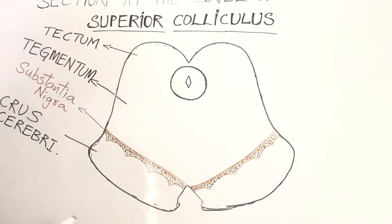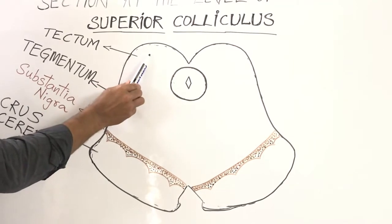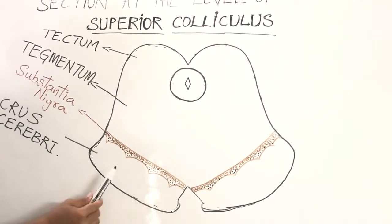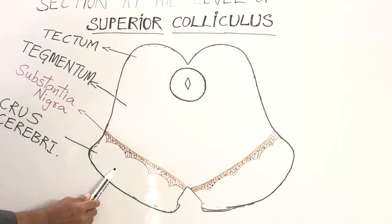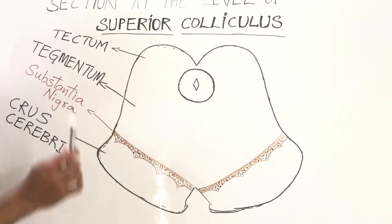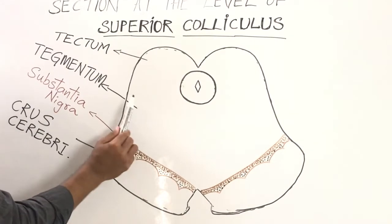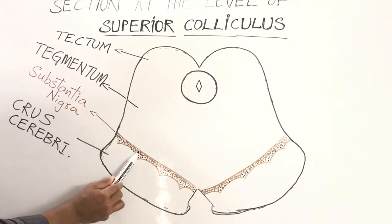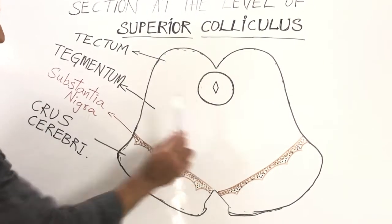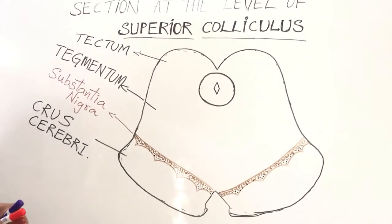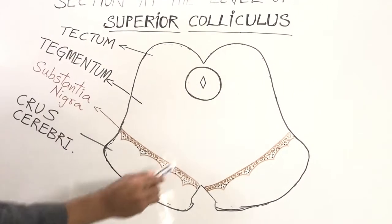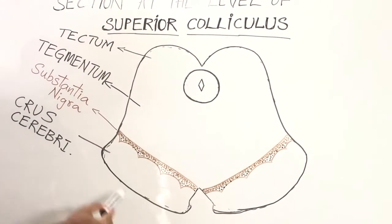So if you talk about the parts of the midbrain, they are: tectum, tegmentum, substantia nigra, and the crus cerebrae. Together, the tegmentum, substantia nigra, and crus cerebrae are called the cerebral peduncle. That covers the internal parts of the midbrain.